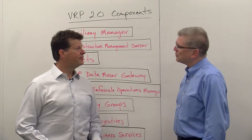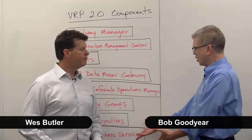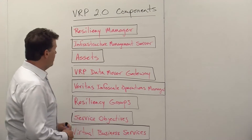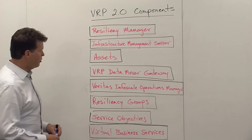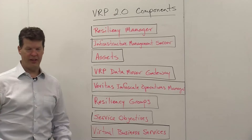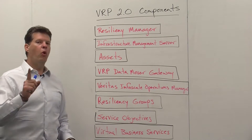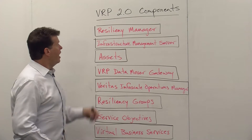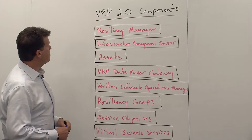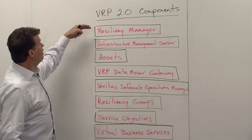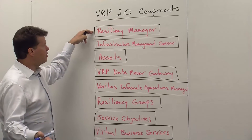Wes, I see you want to talk a little bit about the components that make up VRP 2.0. What can you tell us about all of these? Thank you, Bob. Just an overview of the different components that you'll have in a VRP 2.0 environment. First off, we have the Resiliency Manager — one per data center — and this is basically the overall manager of the environment. Through the Resiliency Manager, we're going to be connecting with our user interface, a browser-based environment.